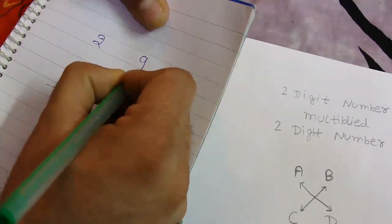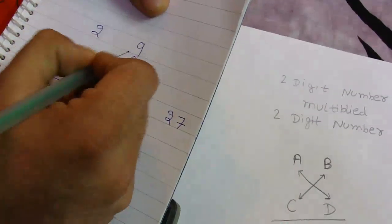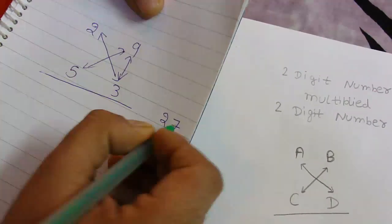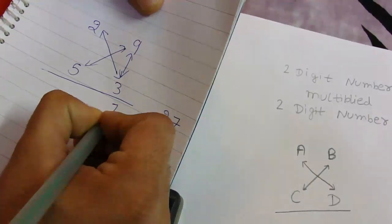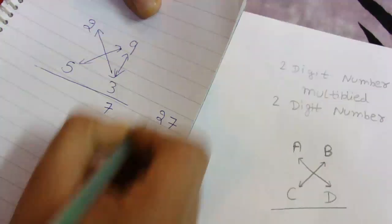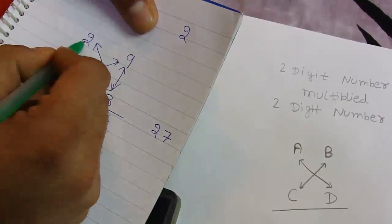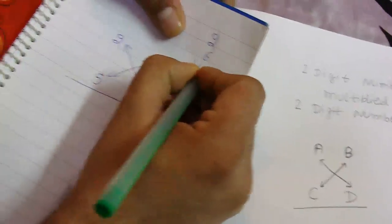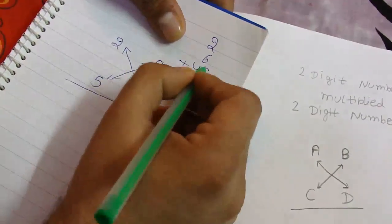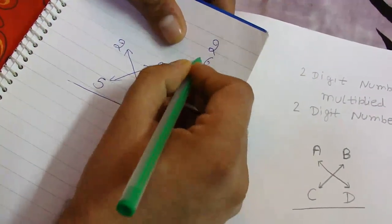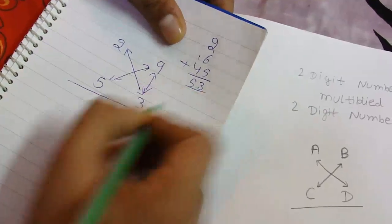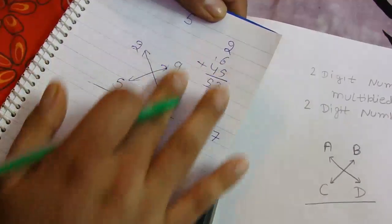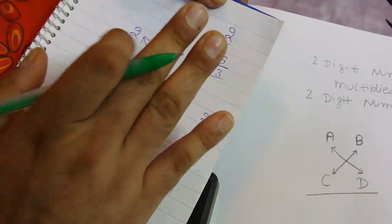We write 7 here and carry over 2. Then cross: 2 times 3 equals 6, 9 times 5 equals 45. We add these numbers, then 53. We write 3 here and carry over 5. Now we've done the second rule also.